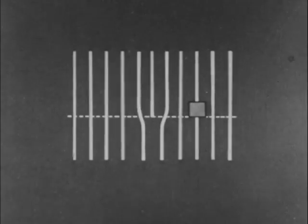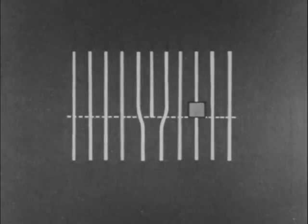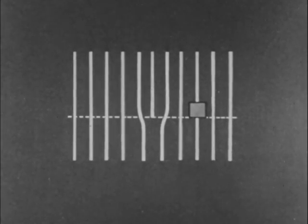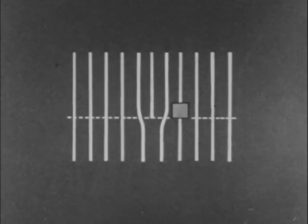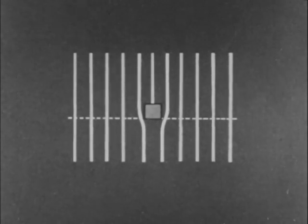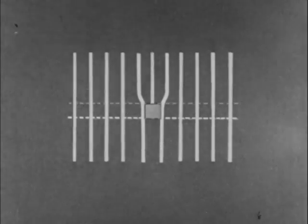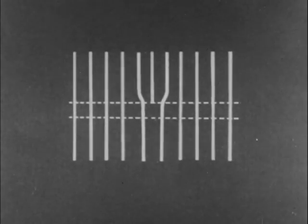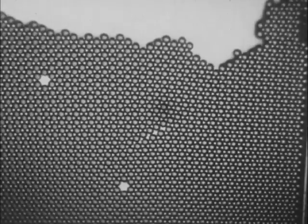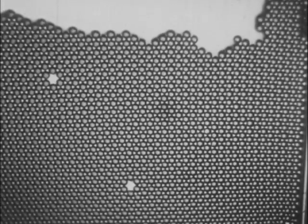If a dislocation jumps from one row to another, it may remove a vacant site. The line diagram shows how this takes place. Now you will see it actually happening in the bubble model — watch the vacancies in the bottom left-hand corner.